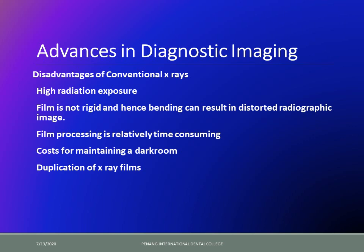Coming to advances in diagnostic imaging — the radiovisiograph has already been installed in the department of conservative dentistry and periodontics. The disadvantages of conventional x-rays — IOPA films — include higher radiation exposure; with RVG you can reduce this to one-tenth of the actual exposure. The IOPA film is not rigid, so bending can result in a distorted radiographic image, which is especially problematic in posterior areas of the mouth.